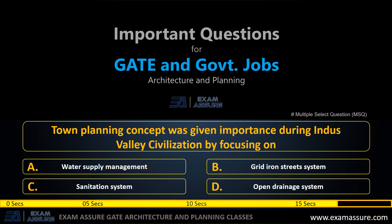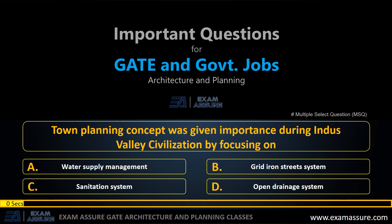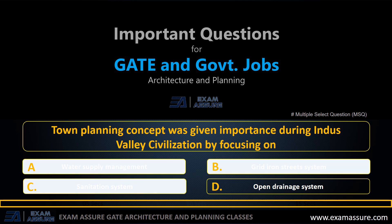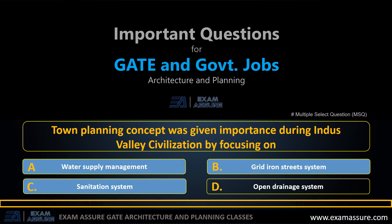Next question: town planning concept was given importance during industrial civilization by focusing on — A: water supply management, B: grid iron street system, C: sanitation system, D: open drainage system. This is also a multiple select question and the correct answer is A, B, and C.